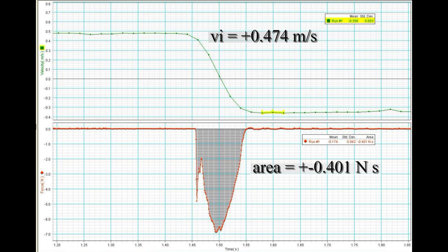The area, or impulse, is obtained from the statistics icon. Here the final velocity is obtained from the mean of a few data points just after the collision.